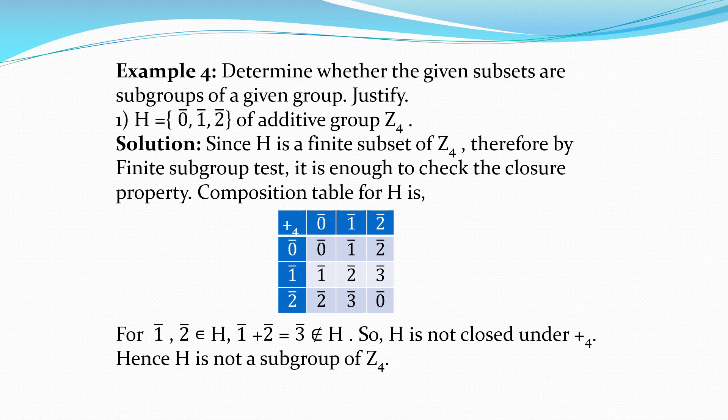Next example: determine whether the given subsets are subgroups of the given group — justified. Until now, every case had H as a subgroup of G (those were 'show that' type examples). Now we must decide whether H is a subgroup or not — the answer may be yes or no. If it is not a subgroup, we must give justification for why; if it is, we use the appropriate test.